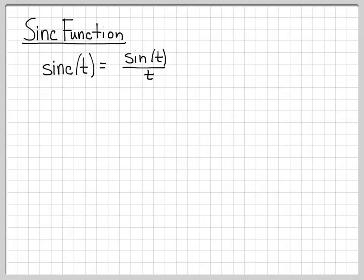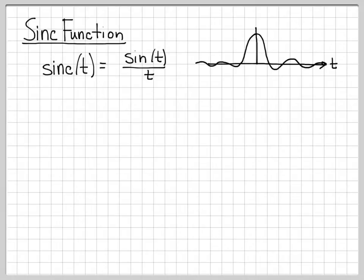Let's talk about the sinc function. The way we use it in this class, we define it as sinc(t) = sin(t)/t. If we plotted this, it looks like a sinc — the numerator sin(t) gives the plot its oscillating nature, and the denominator t causes the sinc function to decay as t gets very large. So the ratio turns into a sinusoid that is decaying as a function of time.